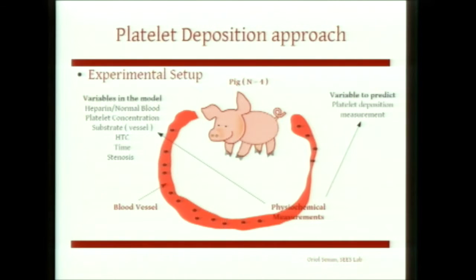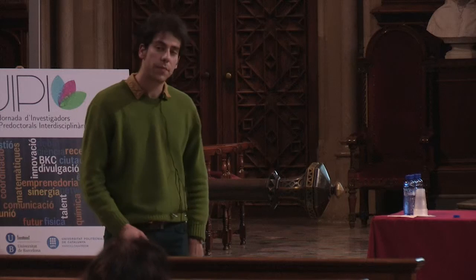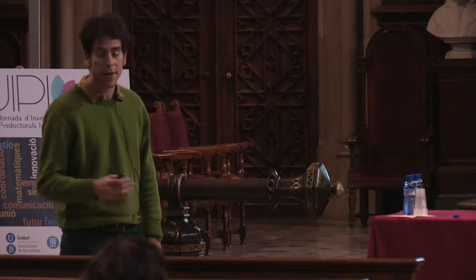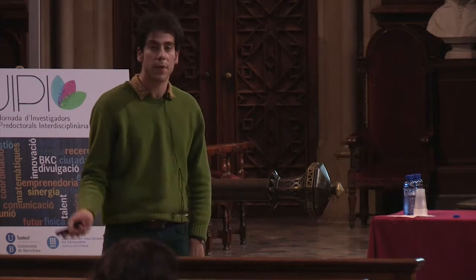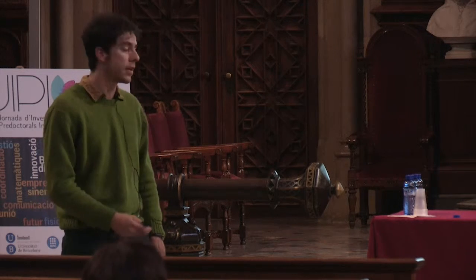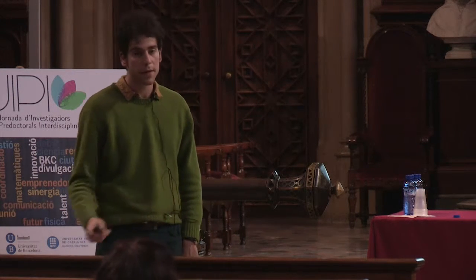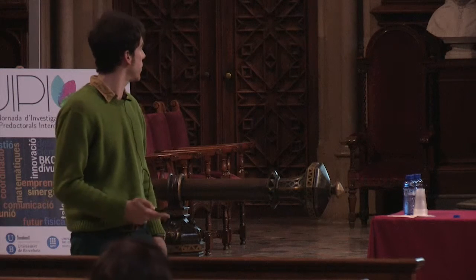Our approach to this complex problem is to study the platelet deposition. We had available some experimental data with the following setup. The experiments were performed on pigs. We had an external blood vessel where we can make several physicochemical measurements. The most important is the platelet deposition — that is the variable we want to predict. Other variables included the presence of heparin or normal blood, the platelet concentration, the level of hematocrit, the time of perfusion, and the stenosis.